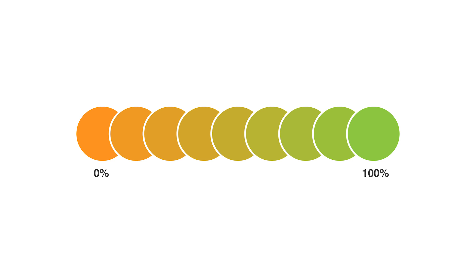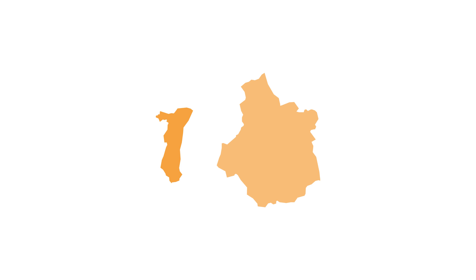The downside to the use of colour is that you can't accurately read or compare values from the map. Another issue is that larger regions appear more emphasised than smaller ones, so the viewer's perception of a shaded value is affected.